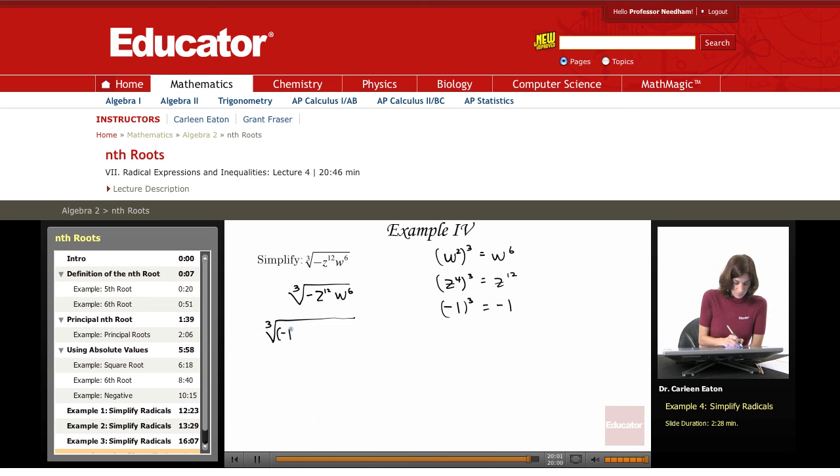This would be negative 1 cubed times z to the 4th cubed times y squared cubed. So when I take the cube root of each of these, you just essentially cancel these.